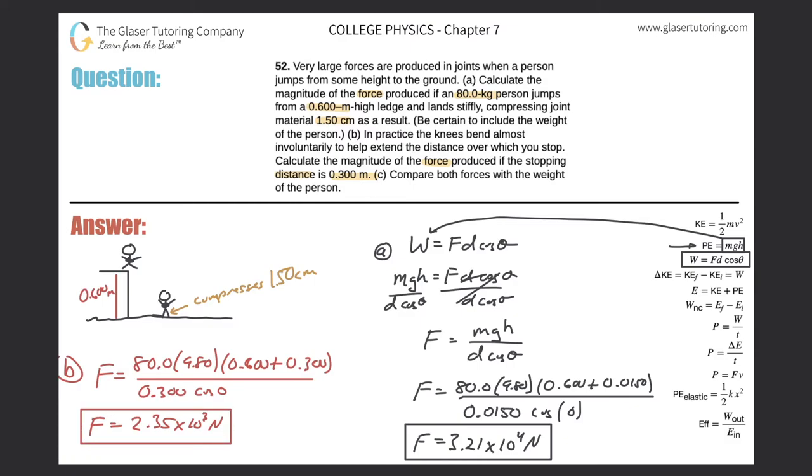And then last but not least, letter C: compare both forces with the weight of the person. So basically, I'm just going to do two divisions here. Let me do the division for letter A. We've got 3.21 times 10 to the fourth. I'm going to take that and divide it by his weight. Now remember, his weight is a function of his mass of 80 kilograms multiplied by the acceleration due to gravity.